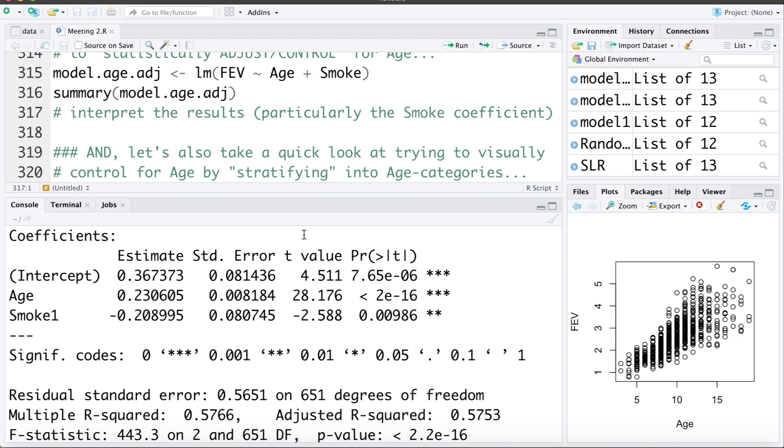Now looking at the summary what do we see with the smoking coefficient? The coefficient is now negative 0.208 or roughly negative 0.21.